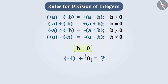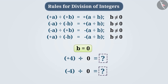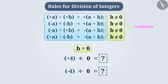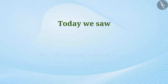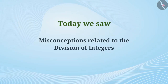For example, plus 4 divided by 0 — we do not know what the result is; it cannot be explained what will happen. Thus, we cannot say for sure which sign will be used in the result. Similarly, if we have to find the result of minus 4 divided by 0, it cannot be achieved. Therefore, B is not equal to 0 is the condition in the given rules. Whenever we mention a rule, we have to mention all the restrictions imposed on it. Today in this video, we have seen certain misconceptions related to the division of integers.